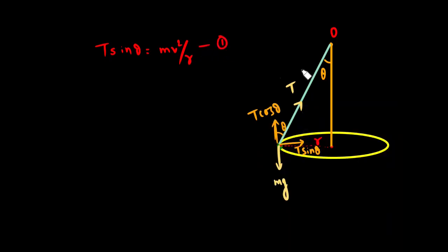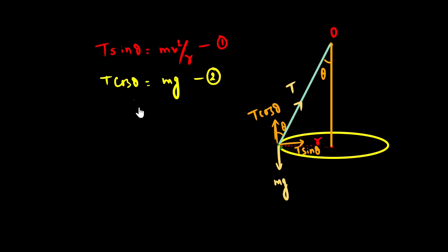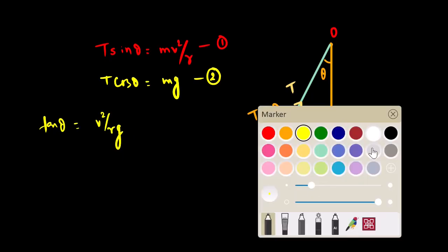Understanding this: centripetal force is provided by T sin theta. Now, T cos theta balances the weight in the vertical direction. So T cos theta equals mg. We can balance these values into our equations.